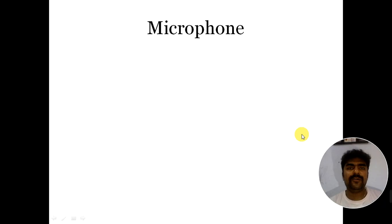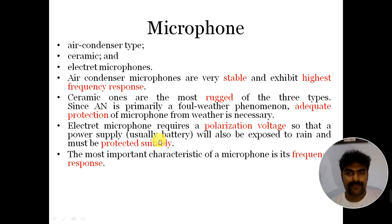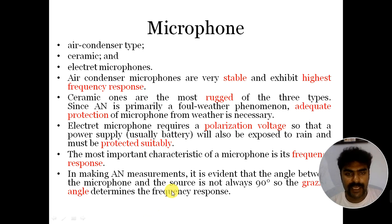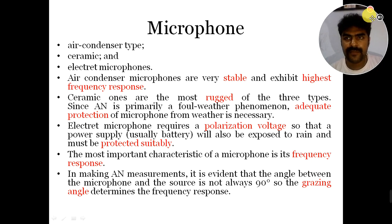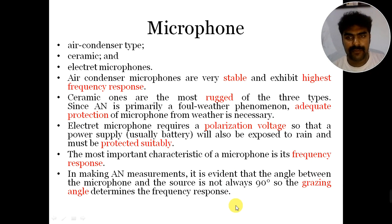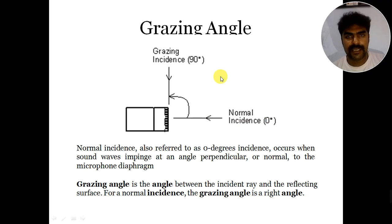Due to this reason, ceramic microphones are the best suitable for measurement of audible noise. The third type is the electric microphone, which requires a polarization voltage, so a power supply is required. This power supply is generally provided by a battery, but that battery will again be exposed to rain or foul weather conditions. The most important characteristic of a microphone is its frequency response, and the main parameter by which you can measure audible noise is the grazing angle.